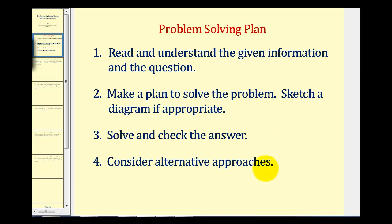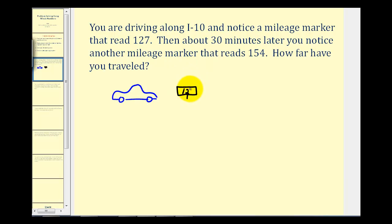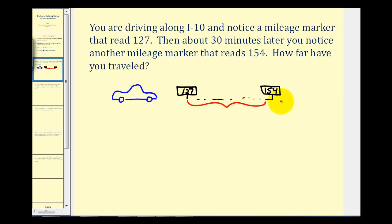Let's take a look at our first example. You're driving along I-10 and notice a mileage marker that reads one hundred twenty-seven. Then about thirty minutes later, you notice another mileage marker that reads one hundred fifty-four. How far have you traveled? You pass one mileage marker at one hundred twenty-seven, and later another at one hundred fifty-four. How far have you traveled?